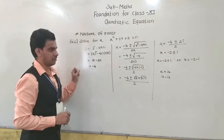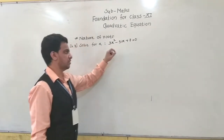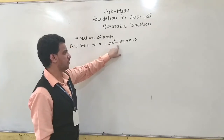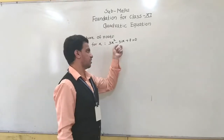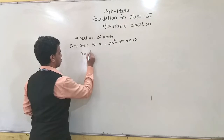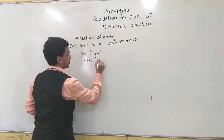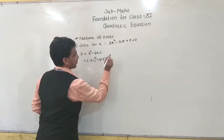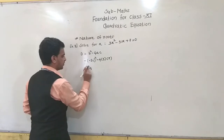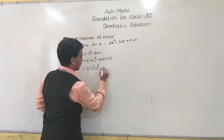Next example: solve for x, 3x² − 5ix + 7 = 0. Here the coefficients are not all real — 3 and 7 are real, but the coefficient of x is −5i, which is imaginary. First find D: D = b² − 4ac = (−5i)² − 4(3)(7) = 25i² − 84 = 25(−1) − 84 = −25 − 84 = −109.